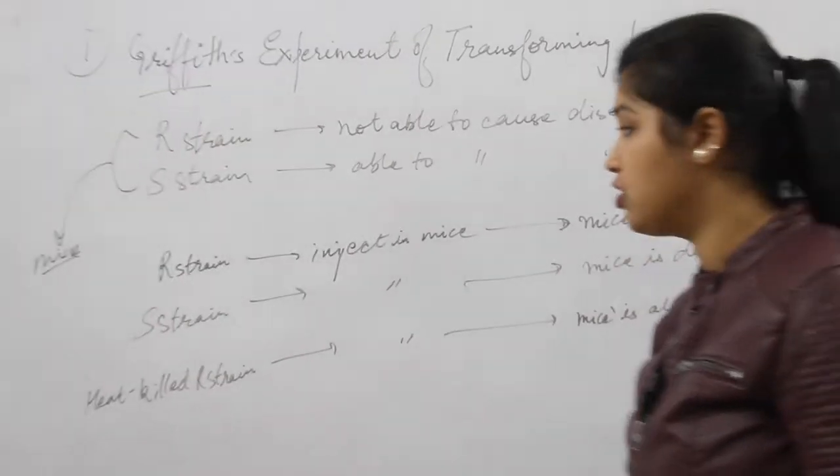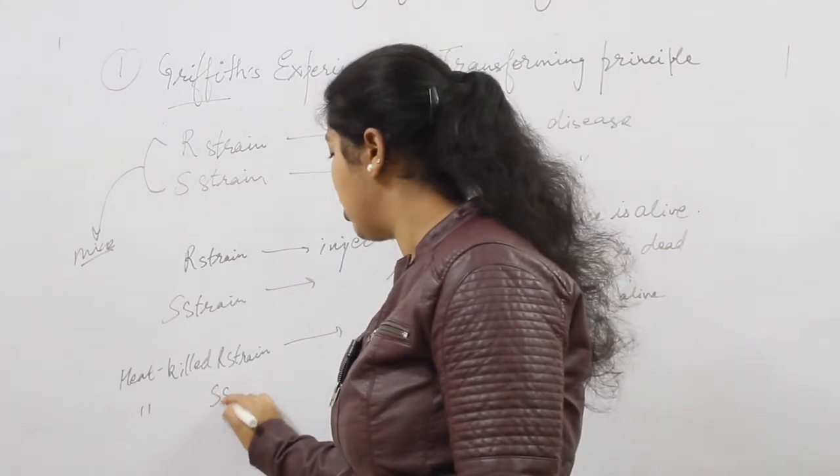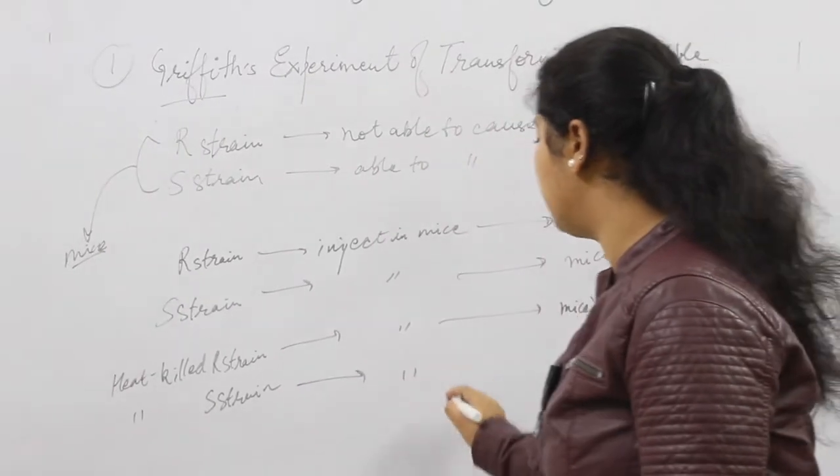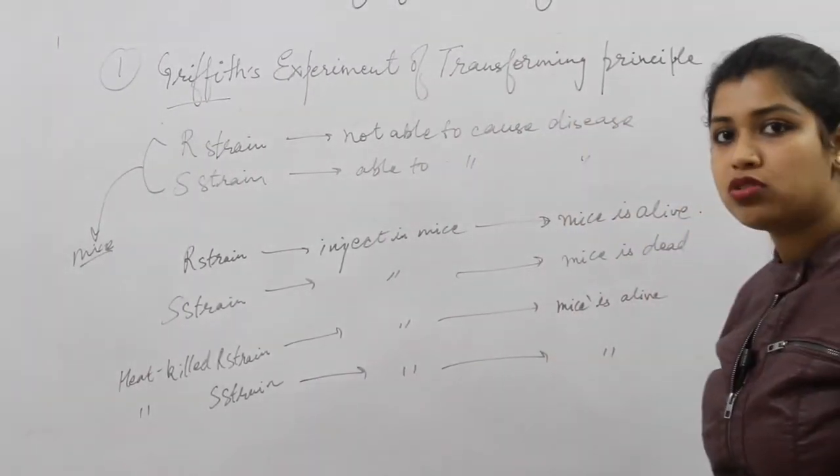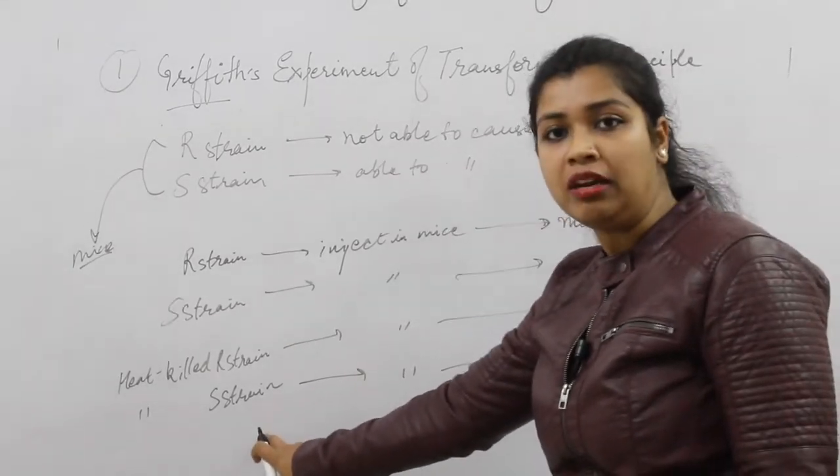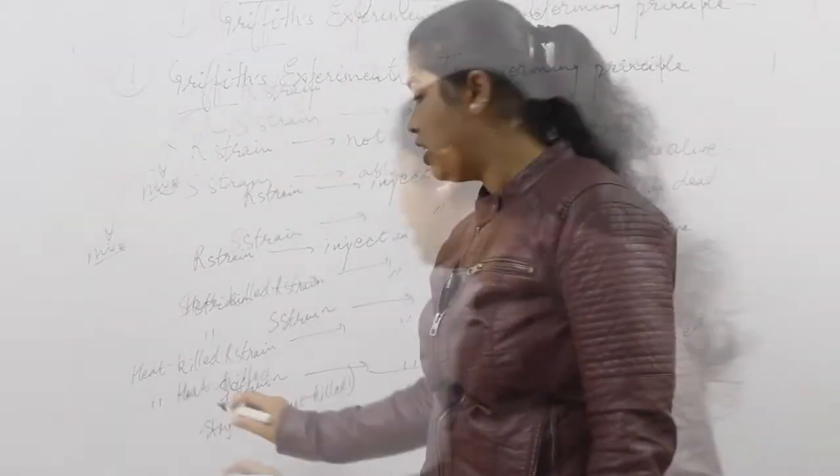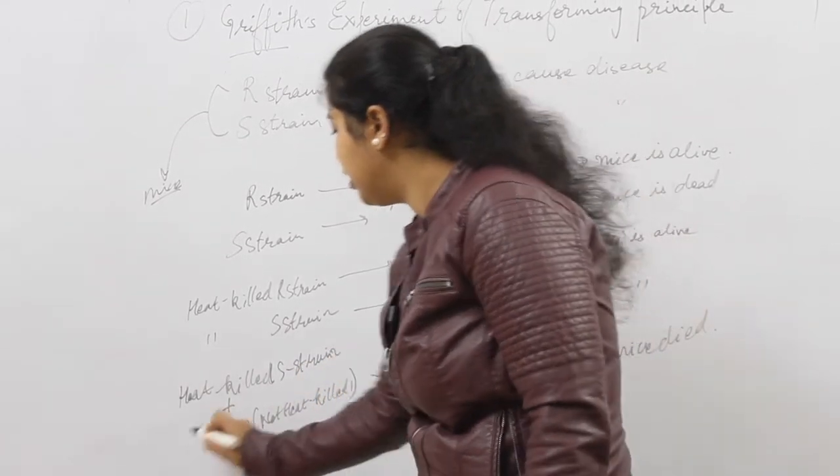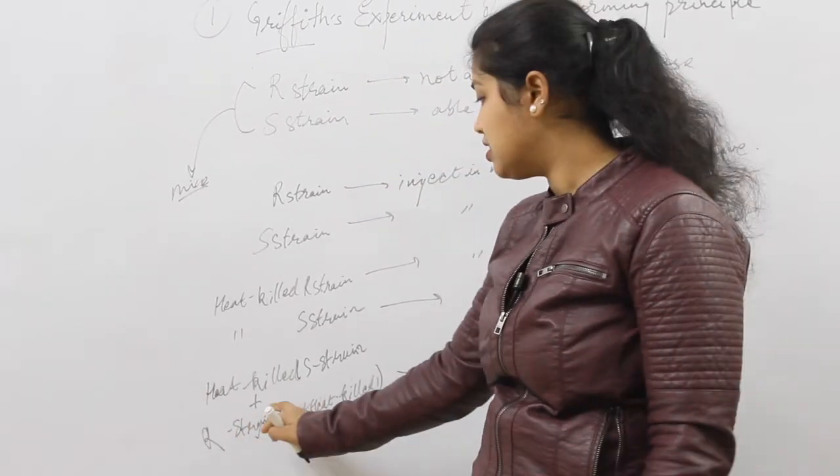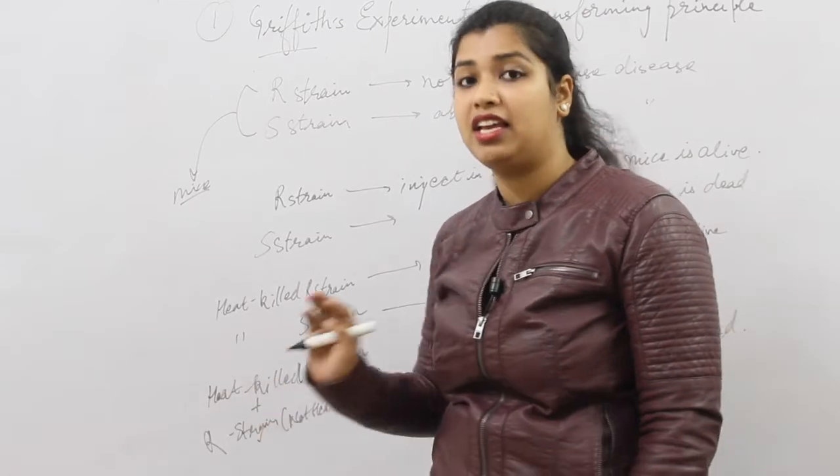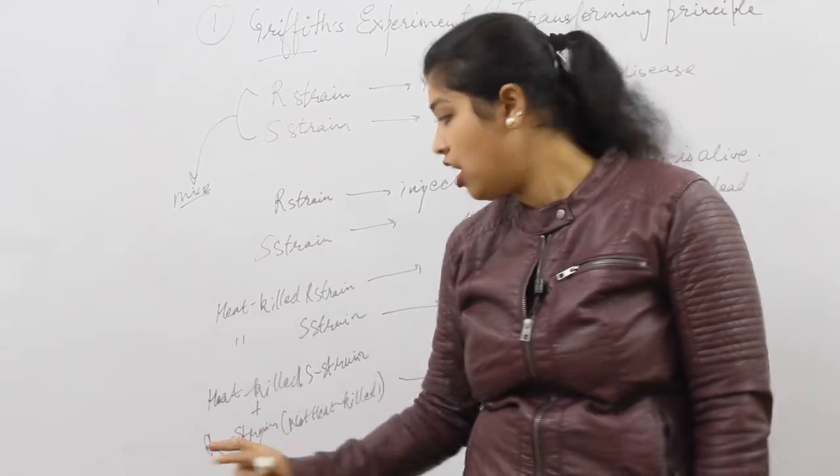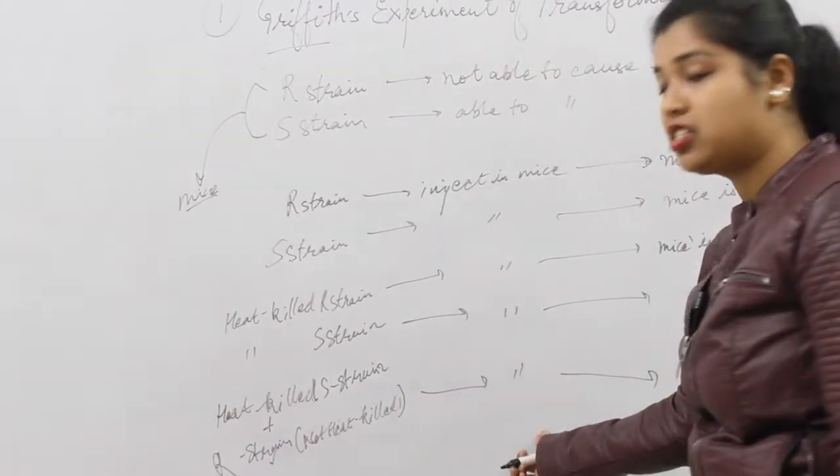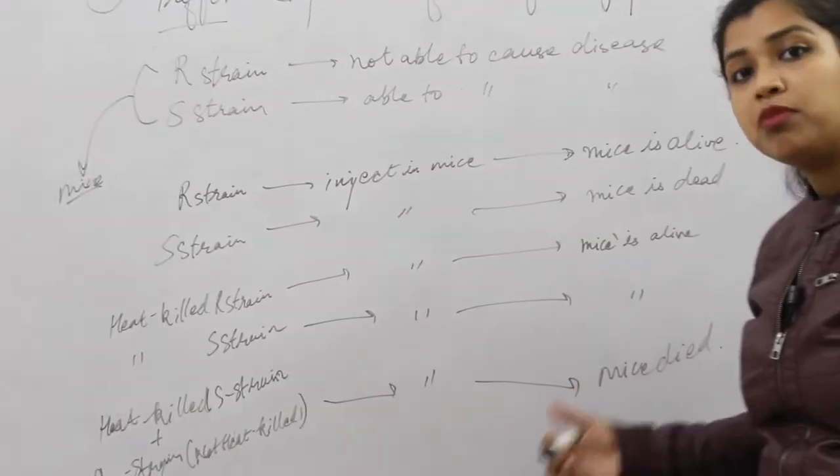Similarly, he had S strain. The virulent species was killed by heat, and he injected it into mice. He saw that the mouse is alive because the heat-killed strain is dead. Then, what did he do in the next setup? He took heat-killed S strain and live R strain. In this case, he killed the virulent strain and kept the non-virulent strain alive, mixed it up, and when he injected it, he saw that the mouse has died.